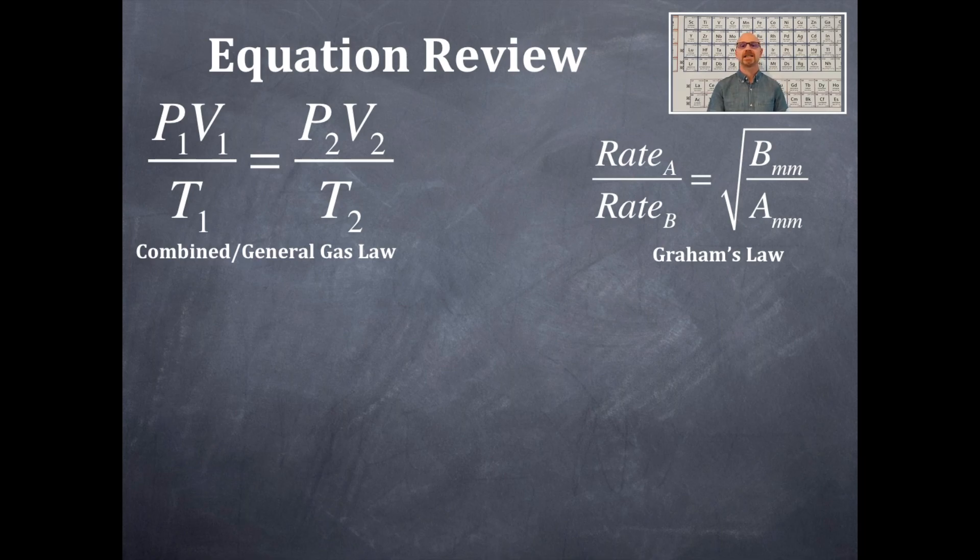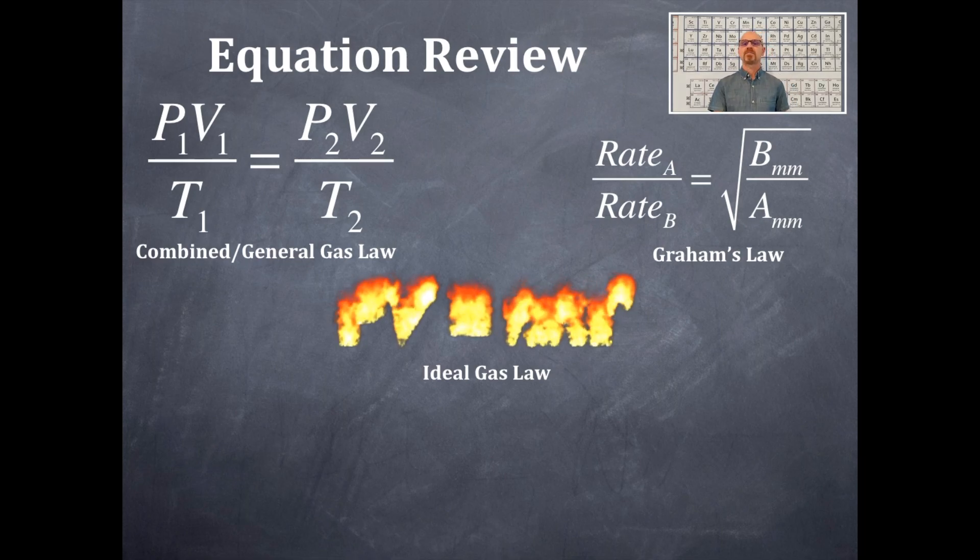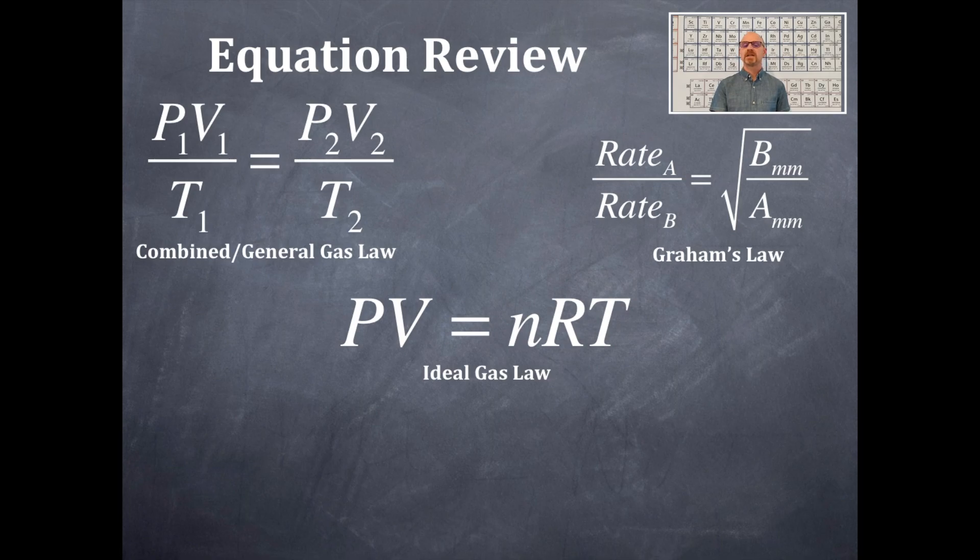The next one is the ideal gas law. And here is the ideal gas law. That is PV equals NRT. P is for pressure. V is for volume. N is for the amount of gas in moles. R is the gas constant. T is the temperature. And this is not a comparison, unlike the combined or general gas law. The ideal gas law is what's happening at this set of conditions.